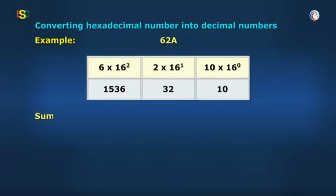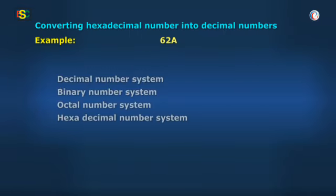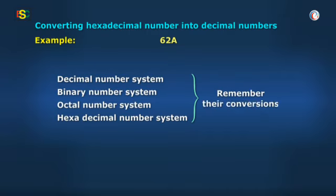So the summation of all the products will be the decimal form of the given hexadecimal number. 1536 plus 32 plus 10 gives 1578. So these were all the number systems that you should learn about and their conversions. Ok Baba, I'll learn all of them.